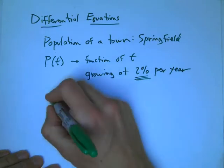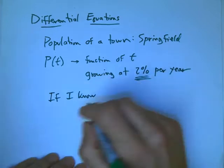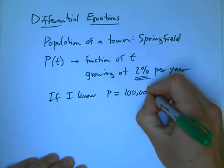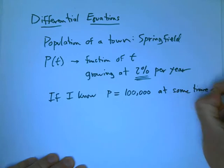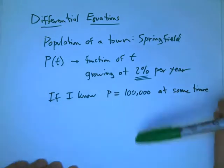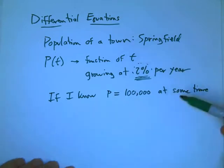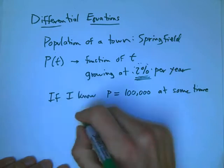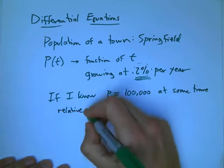So let's look at a situation. Suppose that I know the population is 100,000 at some given time. Then I'd like to know how fast that's growing, not as a percentage, but in terms of how many people per year are living in Springfield. Well, I just have to take that 2% and multiply it by P.